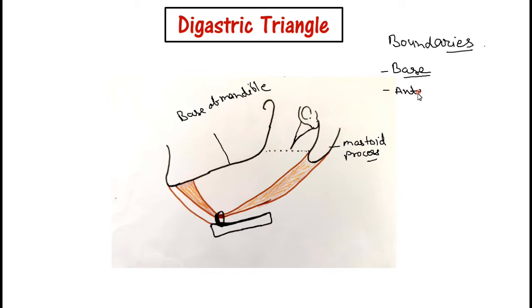Next we have the anteroinferior boundary, which is formed by the anterior belly of the digastric muscle. The posteroinferior boundary is formed by the posterior belly of the digastric muscle.